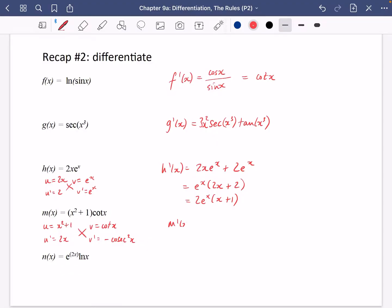So m dash x is going to be minus x squared plus 1 times cosec squared x plus 2x cot x. I'd probably switch those two around so I don't start with the negatives. But I'm not super bothered by that here.